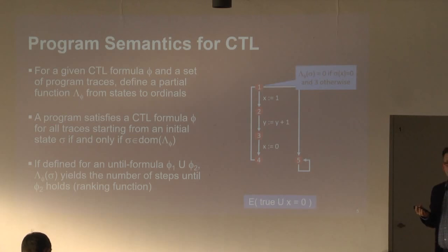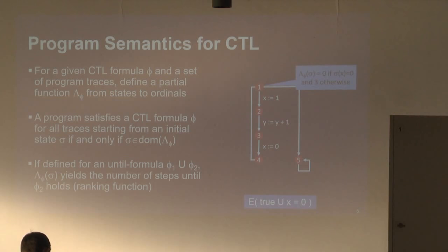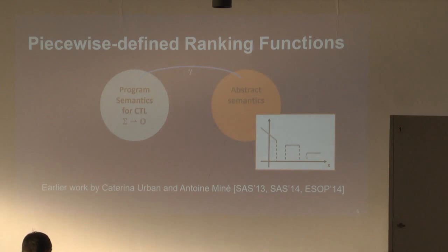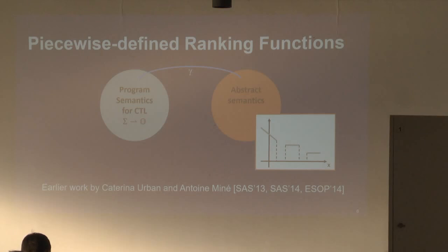That gives us a concrete semantics defined on the concrete traces of the program. To build a static analyzer that checks CTL properties, we need a suitable abstraction of that concrete semantics that we can actually compute. We build on earlier work by Katharina Urban and Antoine Menet, who used piecewise-defined ranking functions to abstract such functions. Let me give you a quick introduction of how these piecewise-defined ranking functions work.